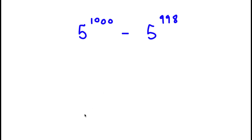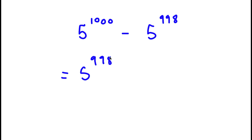In this problem I have 5 to the power of 1000 minus 5 to the power of 998. To solve this, I'm going to first change 1000 to 998 + 2, because 1000 equals 998 + 2.